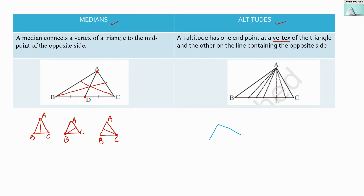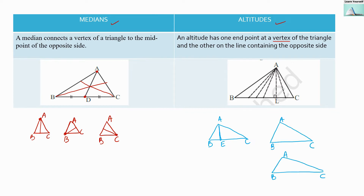If this is my triangle, the altitude will start from a vertex and connect straight to the opposite side. So AE will be the altitude of this triangle. Similarly, an altitude from another vertex goes to the opposite side — and here also you can see it is not a midpoint. Starting from C it also goes to the opposite side and is not a midpoint. An altitude connects a vertex to the opposite side but not to the midpoint of that side.